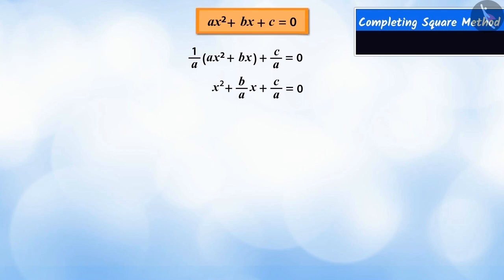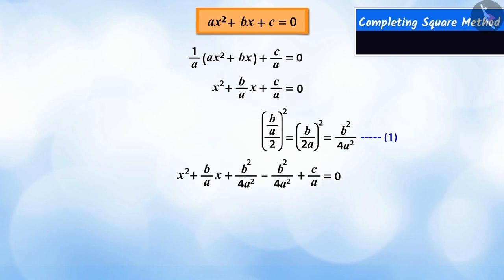Then, to make a perfect square, we divide the coefficient of x by 2 and raise it to the power of 2. We will add and subtract the value obtained into the equation so that the equation is balanced. This is equation 2.